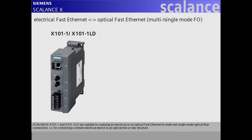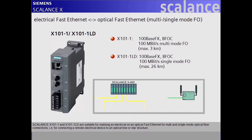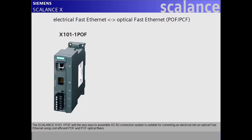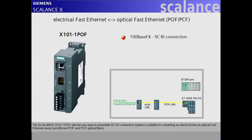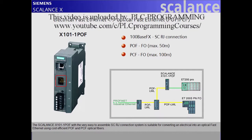Scalance X1001-1 and X1001-1LD are suitable for realizing an electrical to optical fast Ethernet for multi- and single-mode optical fiber connections, i.e. for connecting a remote electrical device to an optical tree or star structure. The Scalance X101-1POF, with the very easy to assemble SCRJ connector system, is suitable for converting an electrical into an optical fast Ethernet using cost-efficient POF and PCF optical fibers.